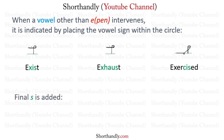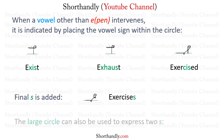Whenever we have to represent S just after the large circle, it is indicated as shown in the word EXERCISES. The large circle can also be used to express double S. For example, in the word MISSPELL, we use just the large circle to represent the double S.